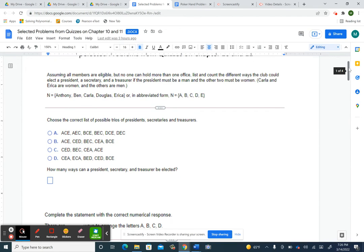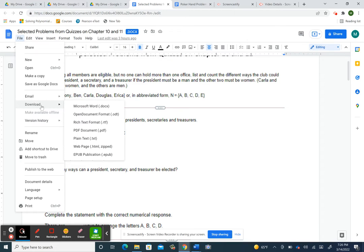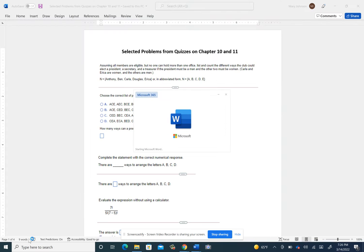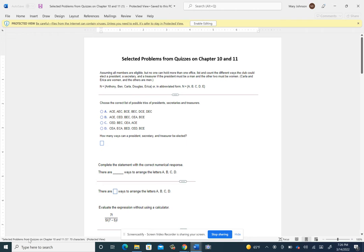So on this problem, this first part comes out of the Chapter 10 material. So on this first problem, it says, assuming all members are eligible, but no one can hold more than one office, list and count the different ways the club could elect a president, secretary, and a treasurer if the president must be a man and the other two must be women. Let me download it as a Word document and open it up. That's better.